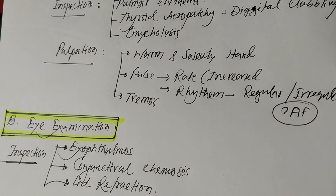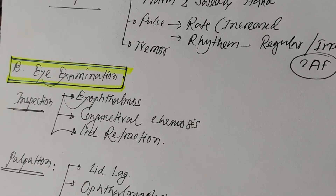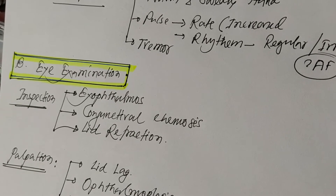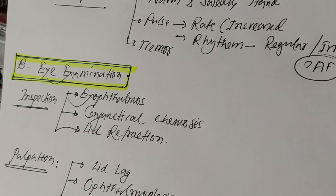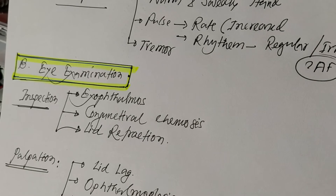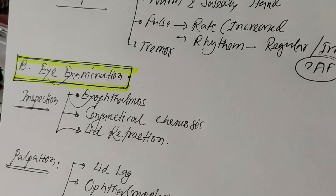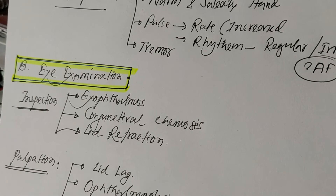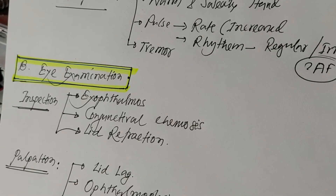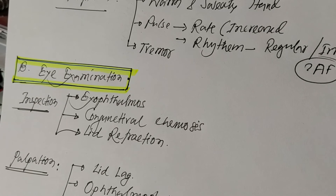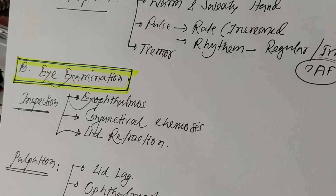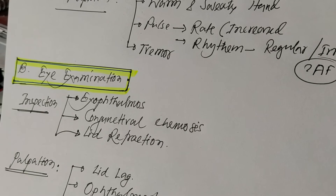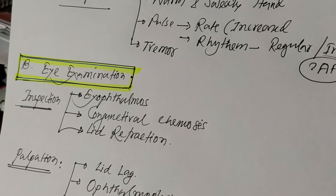The second area is eye examination. On inspection, exophthalmos will be obvious. During exophthalmos examination, you should examine the eye from the front, side, and back of the patient. There may be conjunctival chemosis and lid retraction. Lid retraction means the sclera is seen above the upper limbus of the cornea. Normally, the sclera above the upper limbus is not visible — instead, the upper one-third of the cornea is covered by the upper lid.